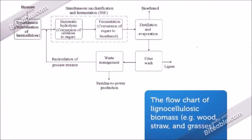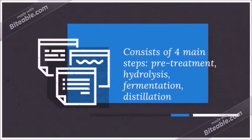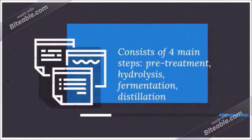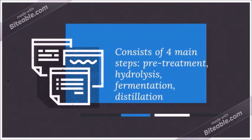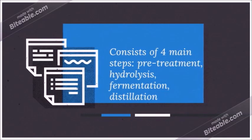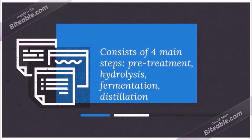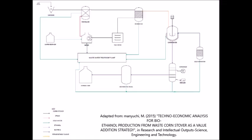For this type of feedstock, the conventional process includes four main steps: pre-treatment, hydrolysis, fermentation, and distillation. This process flow diagram shows the process in detail.